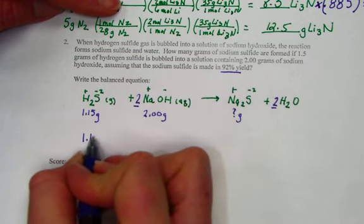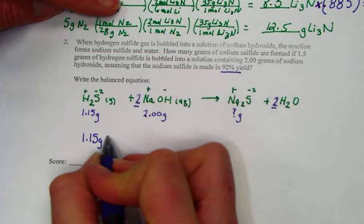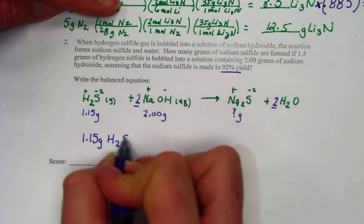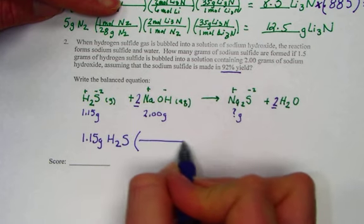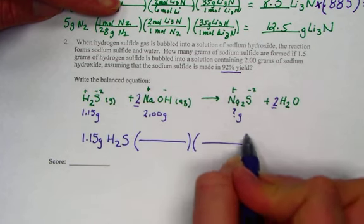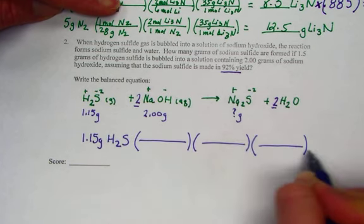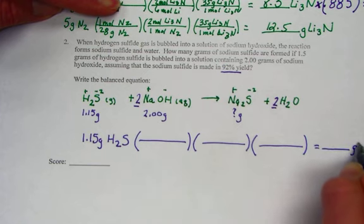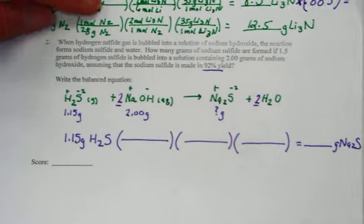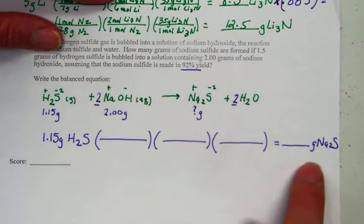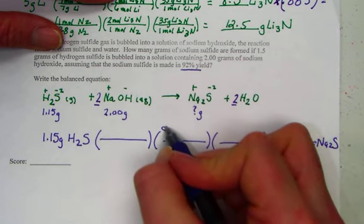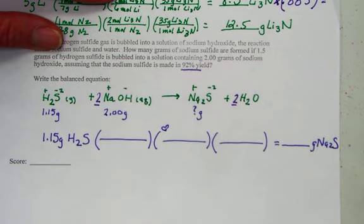We'll have two stoichiometry steps to set up. 1.15 grams of H2S would be the beginning place for our first. And we can get our three parentheses ready to see the target, which would be grams of Na2S. Given a mass, we'll calculate a mass, the three steps to stoichiometry, where the middle is our want over given stoichiometric ratio.